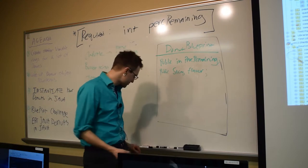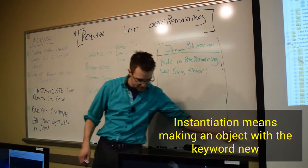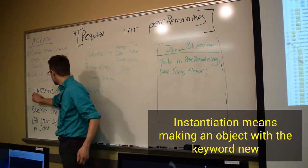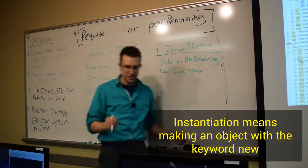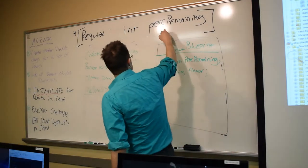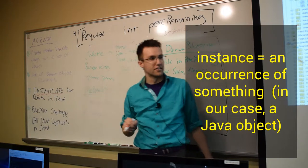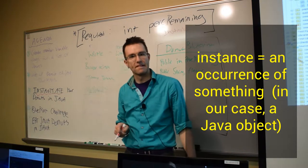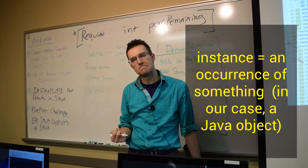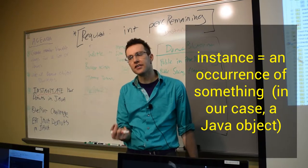The technical term that we use in Java is really cool. Instantiate. What is an instance? Tell me about this word, instance. Getting there? An event? Maybe. A moment. An occurrence. I like that.